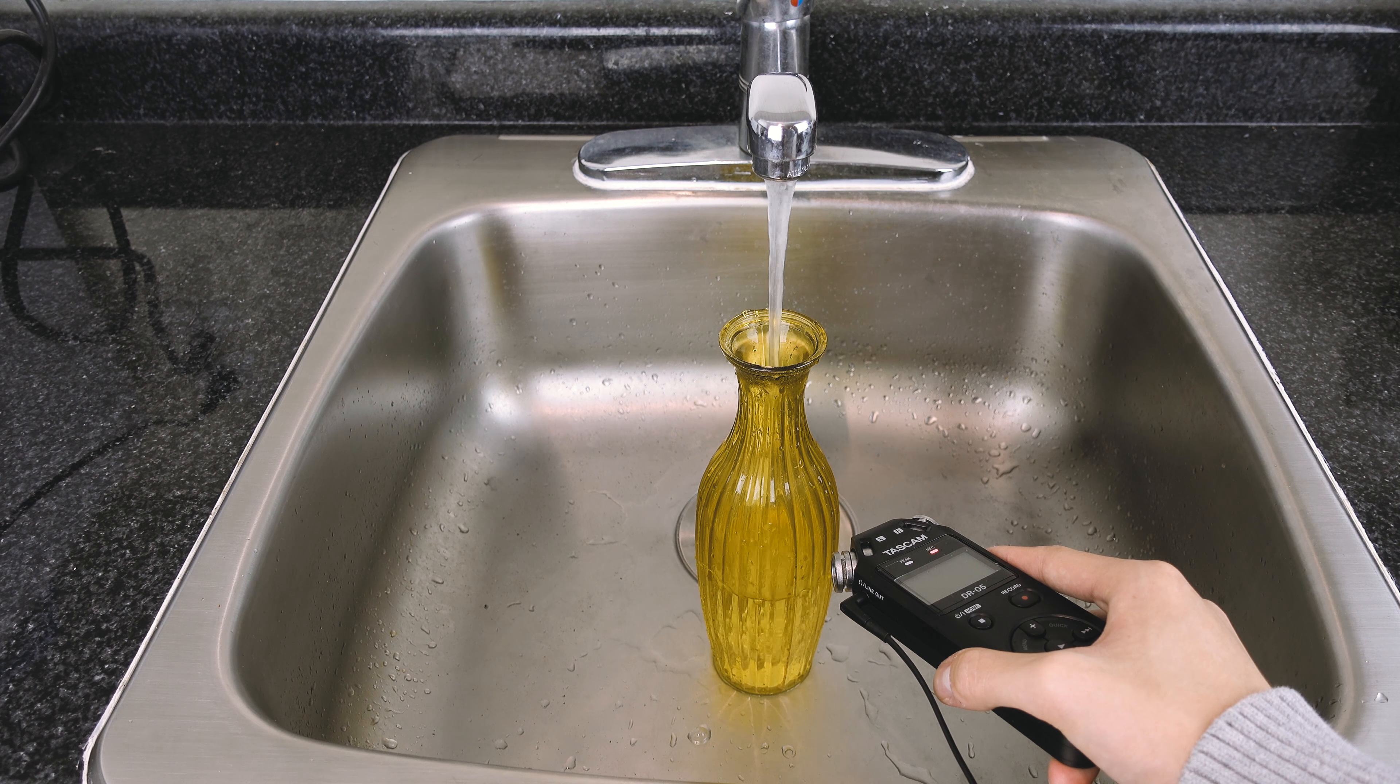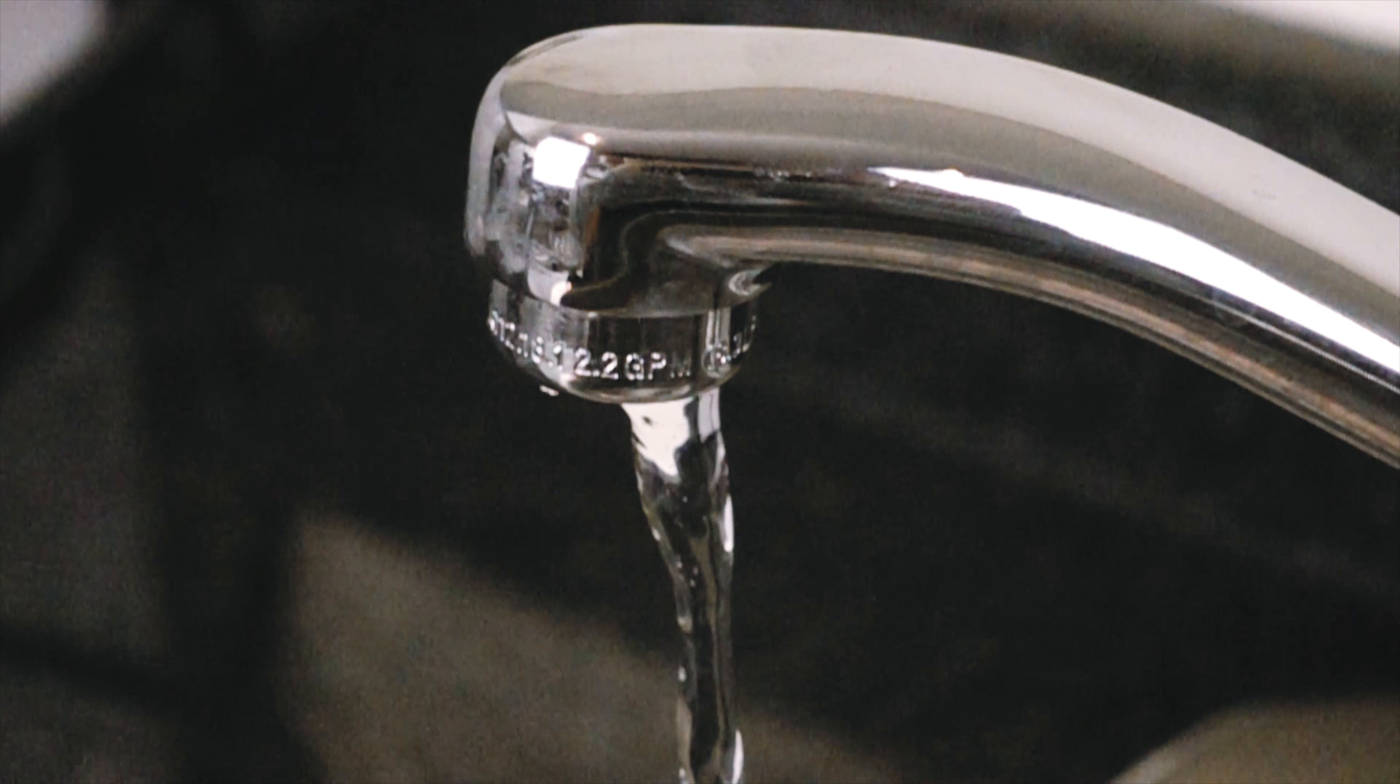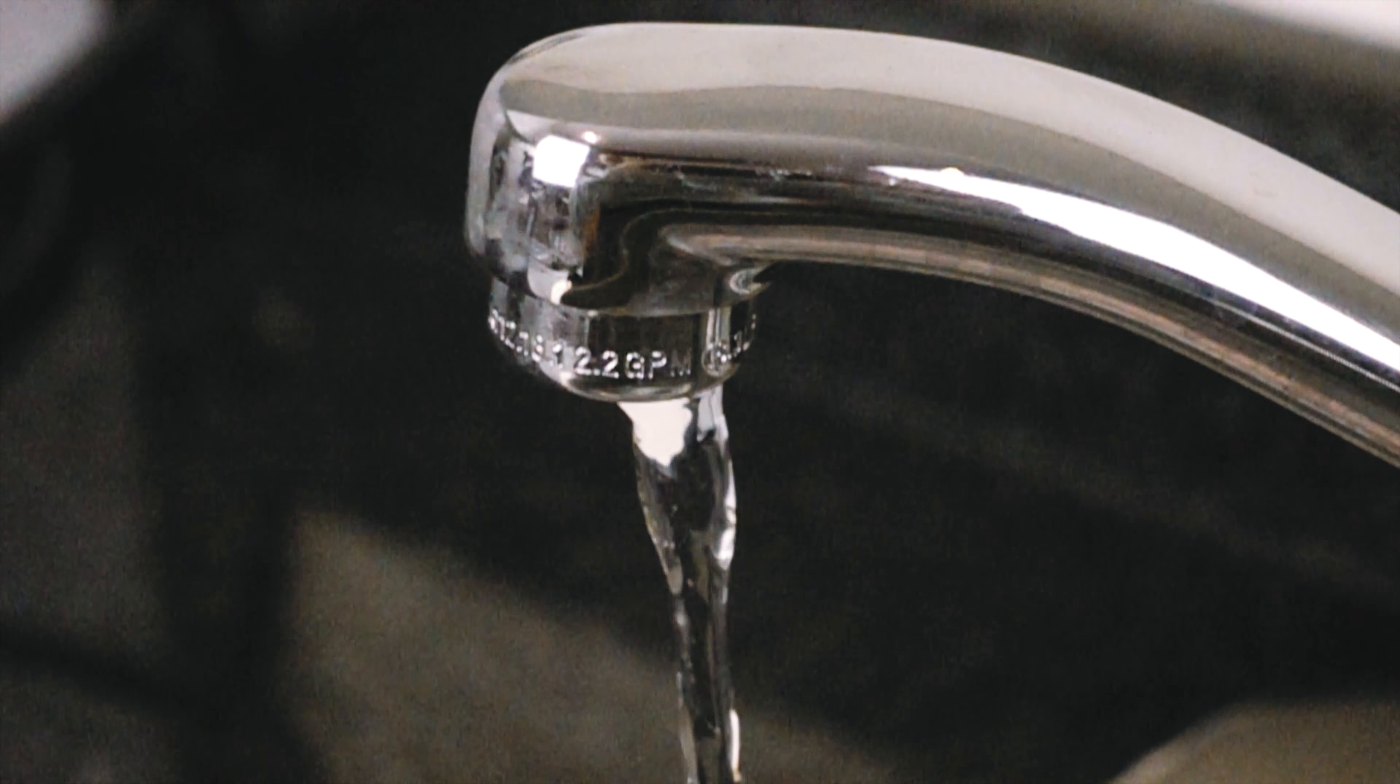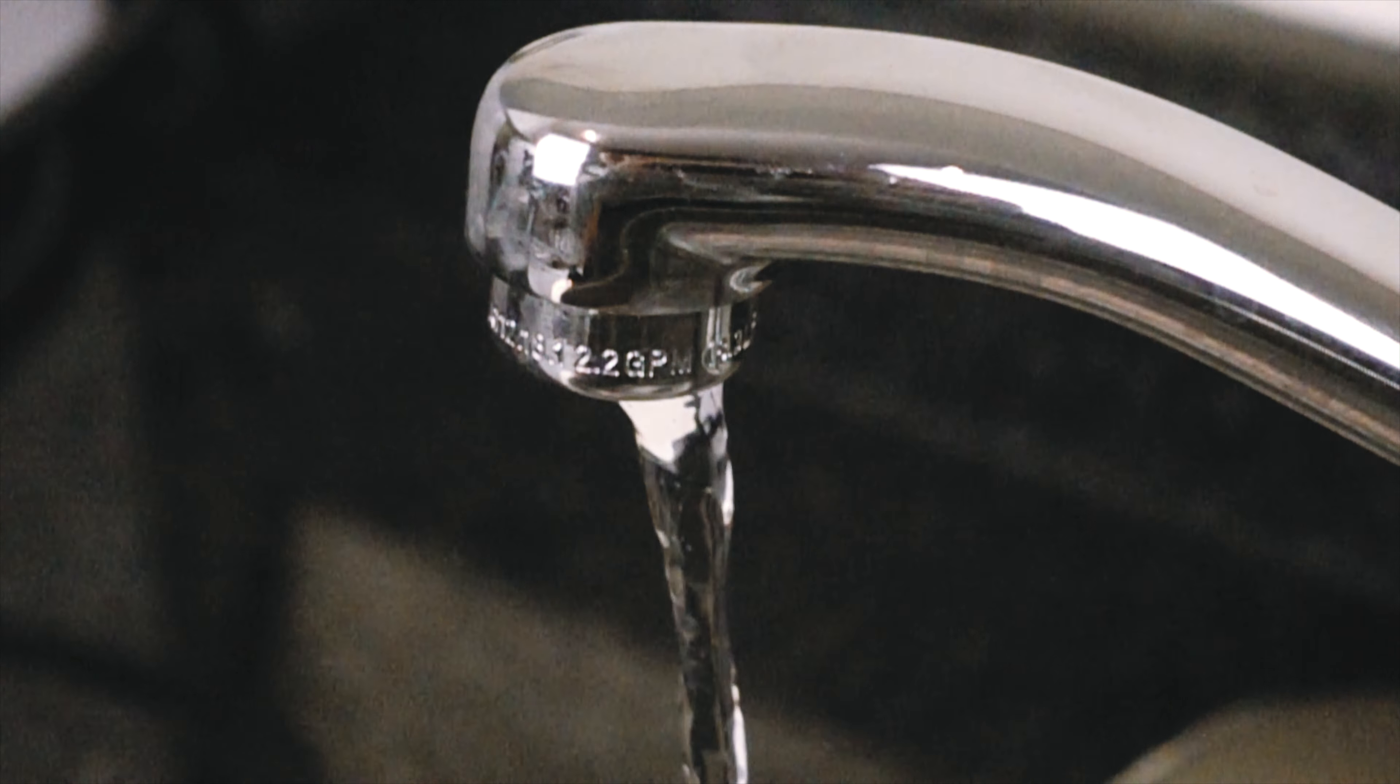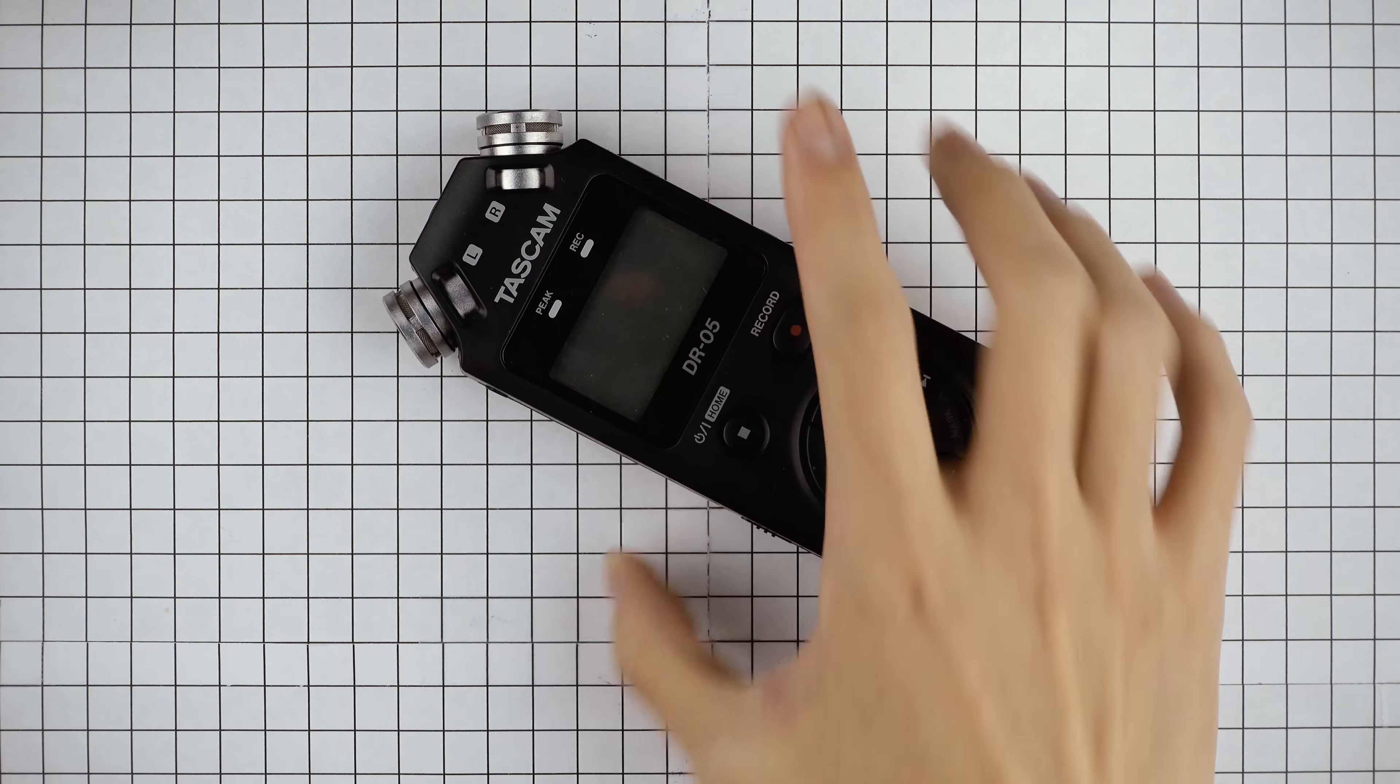The problem statement asks us to fill up the bottle with a vertical water jet. The easiest way that you can achieve this is by using the faucet at home. The materials that we will use are a bottle and some type of sound recording device.